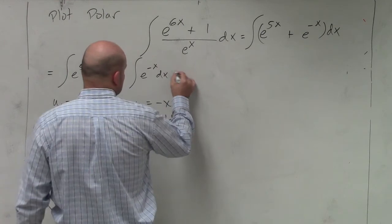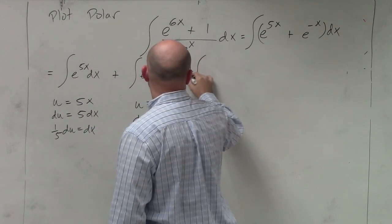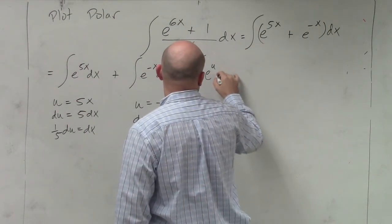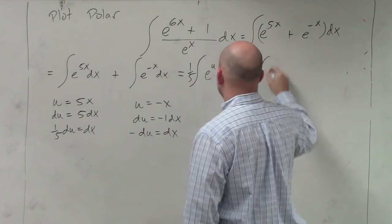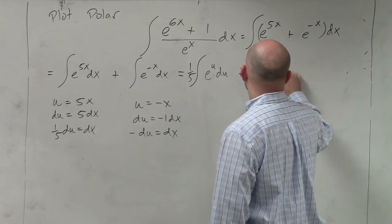So now I can rewrite this as one-fifth. I could take the one-fifth out. One-fifth e^u du plus take out the negative, e^u du.